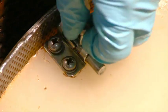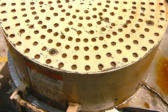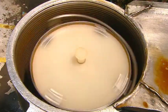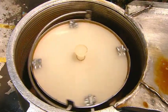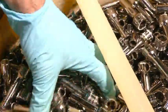They lock the tub of sockets in a centrifuge machine. It spins the parts to get rid of the excess rust-proofing liquid. And now these sockets are ready to shine on the job.